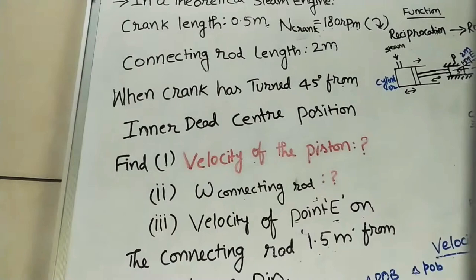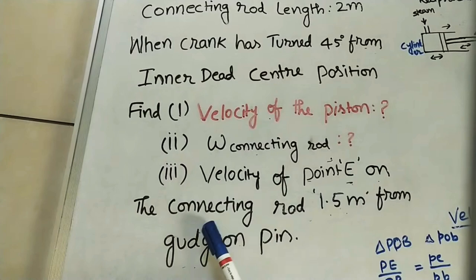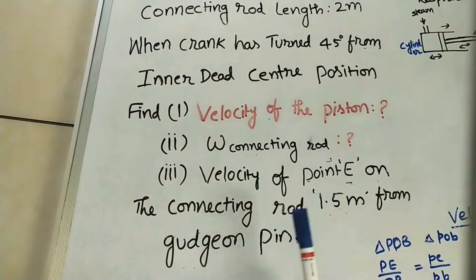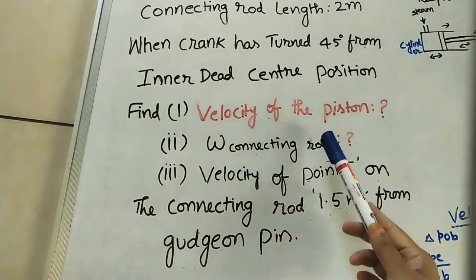Third, we need to find the velocity of a point E on the connecting rod. This point E is 1.5 meters from the gudgeon pin. We have to mark this E point and find the velocity. In this problem, three velocities are given to find.